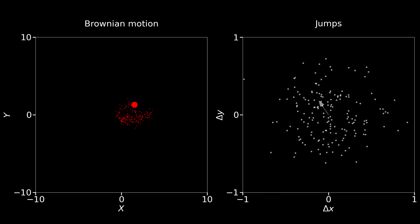As we can see, after a long time, the distribution of jumps or white dots is symmetrical with respect to the origin.